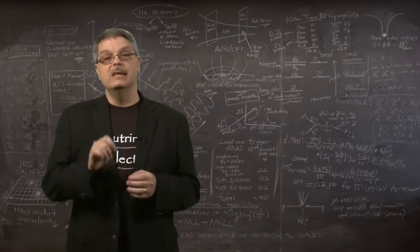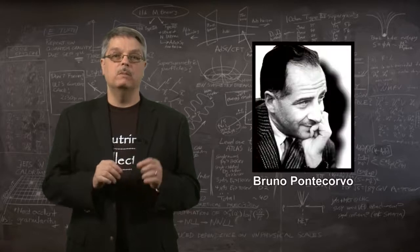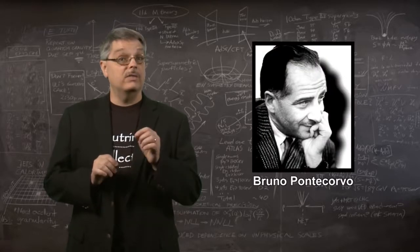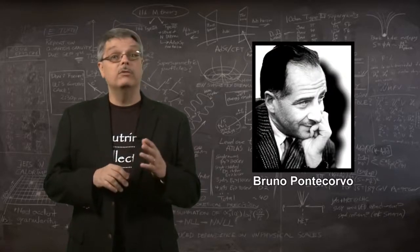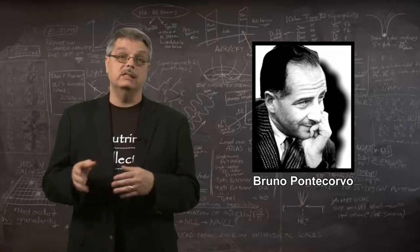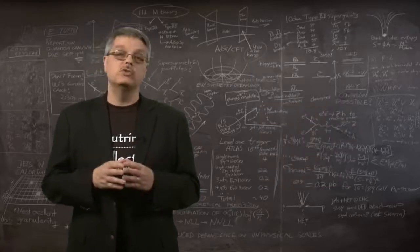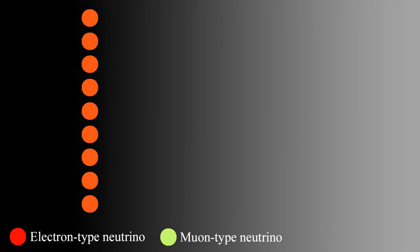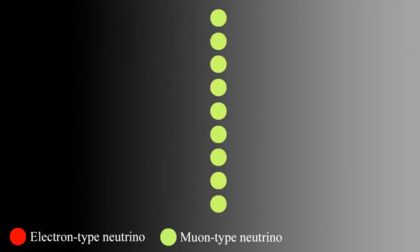In the mid to late 1950s, Italian-born physicist Bruno Pontecorvo hypothesized that it would be possible for the different flavors of neutrinos to oscillate into one another. If the idea was true, then a bunch of electron-neutrinos could gradually morph into muon-neutrinos and then back again to electron-neutrinos.